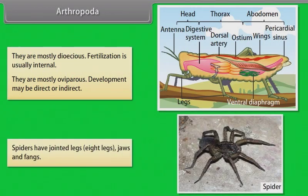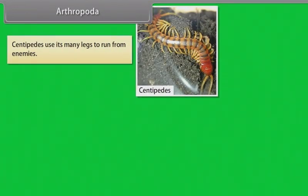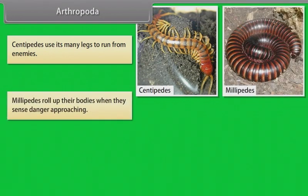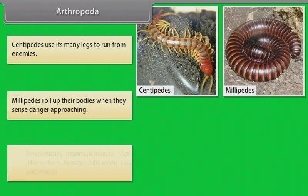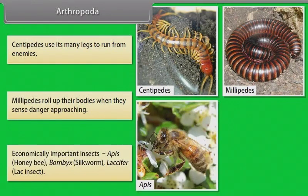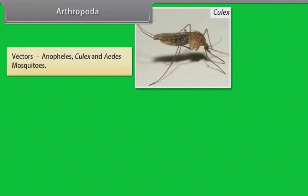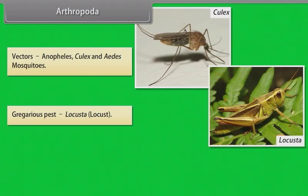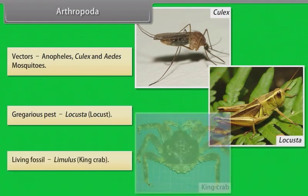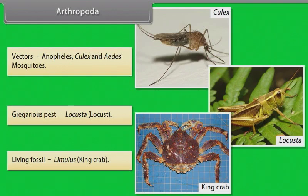Spiders have jointed legs — eight legs — jaws and fangs. Centipedes use their many legs to run from enemies. Millipedes roll up their bodies when they sense danger approaching. Economically important insects include Apis (honeybee), Bombyx (silkworm) and Laccifer (lac insect). Vectors include Anopheles, Culex and Aedes mosquitoes. A gregarious pest is Locusta, that is locust. A living fossil is Limulus, or King Crab.